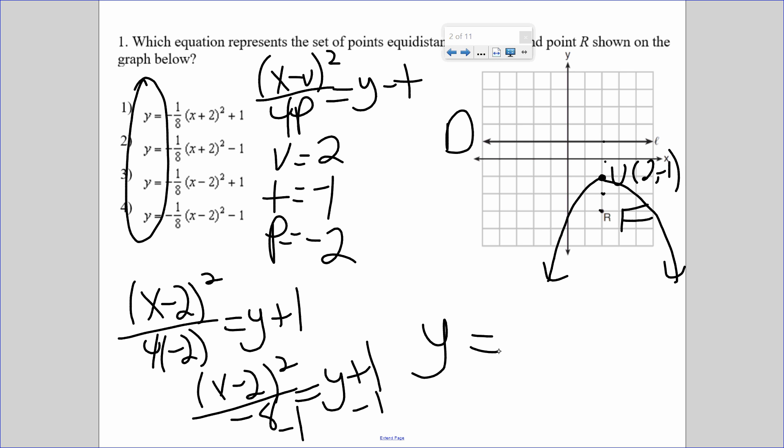Notice also that they have the negative 1 eighth in front, and we mentioned that it might need to get pulled out. So it's negative 1 eighth x minus 2 squared minus 1. Look very carefully here. It's not a plus 2. It's a minus 2. It's a minus 1. Choice 4.